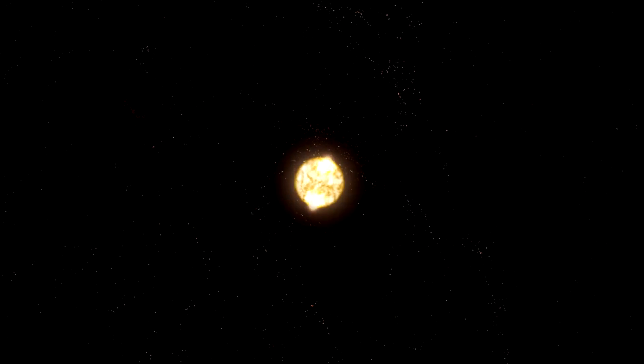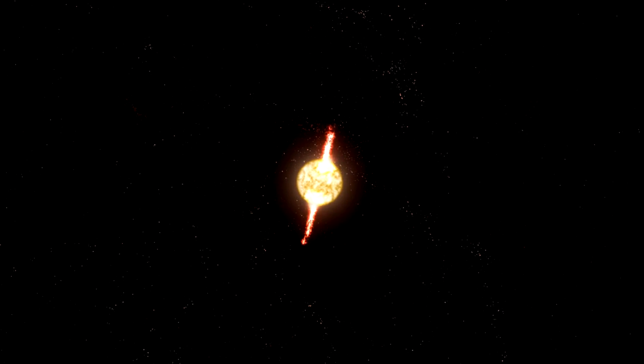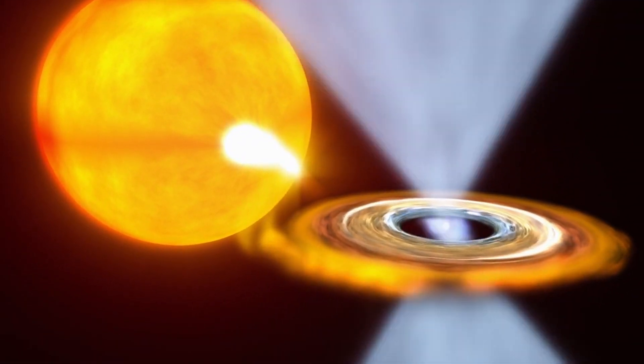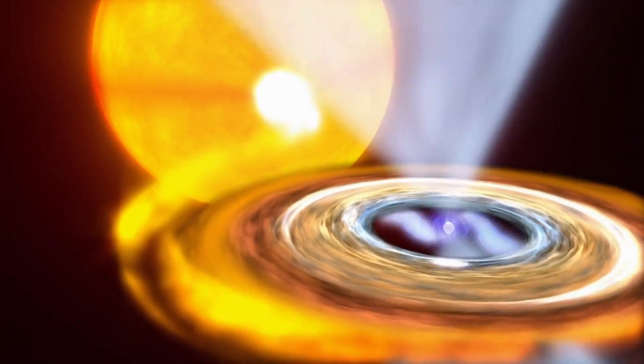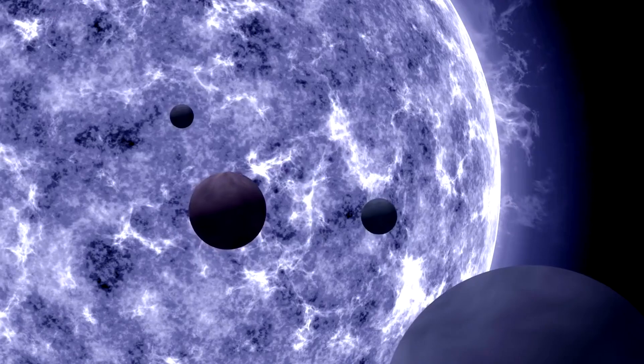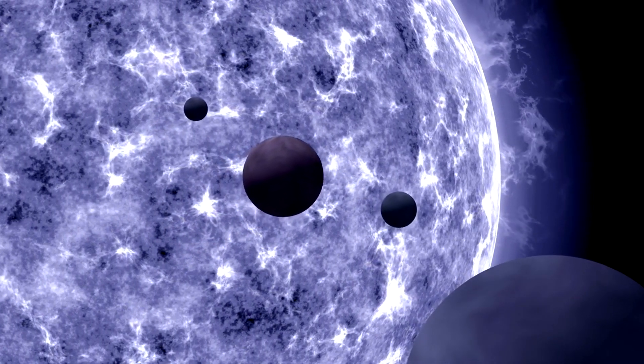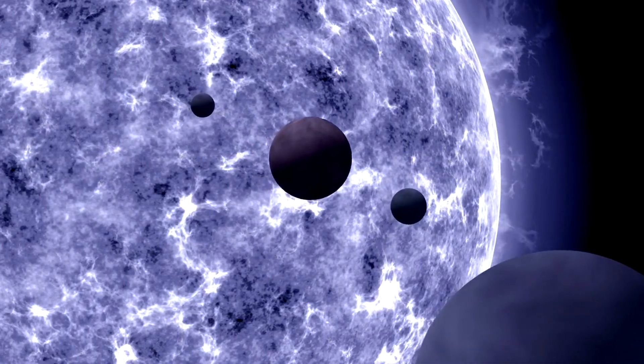Furthermore, the study of a Betelgeuse supernova could shed light on the formation and behavior of neutron stars and black holes. These are the remnants left behind after a supernova explosion. Neutron stars are incredibly dense objects composed almost entirely of neutrons, while black holes are regions of space where gravity is so strong that not even light can escape. Observing the formation of these objects and their interactions with the surrounding environment would provide critical data for testing theories of gravity and high-energy astrophysics.